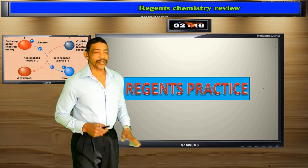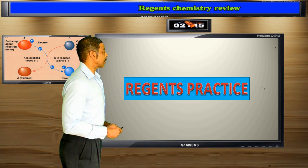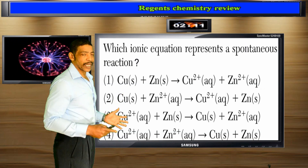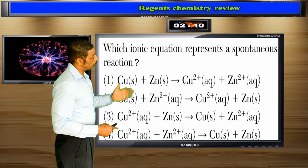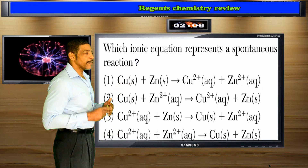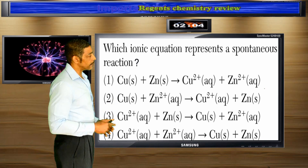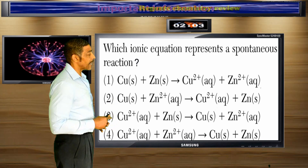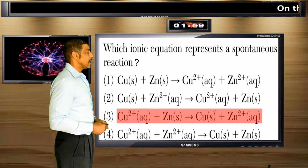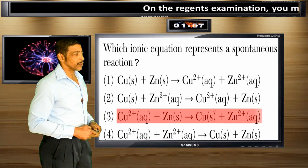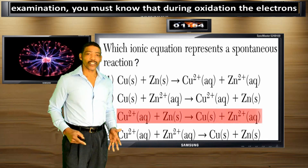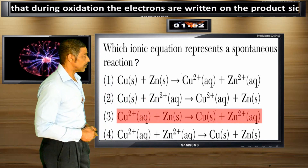Now for some practice, consider the following questions. Which ionic equation represents a spontaneous reaction? To answer this question, refer to table J. If the symbol for the atom is above the symbol for the ion on table J, then the reaction will be spontaneous. The correct answer is number 3, where the symbol for zinc is above the symbol for copper on table J.